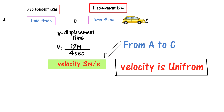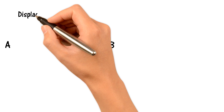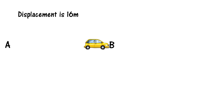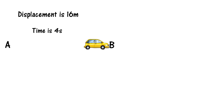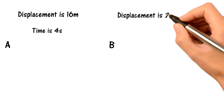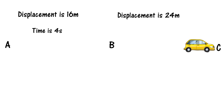Now let's look at non-uniform velocity. A car starts at point A and moves to point B — the displacement is 16 meters and the time taken is 4 seconds. The car then moves from point B to point C — the displacement is 24 meters and the time taken is 3 seconds.